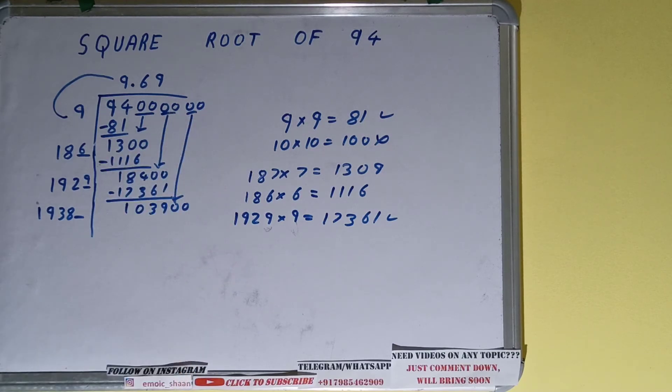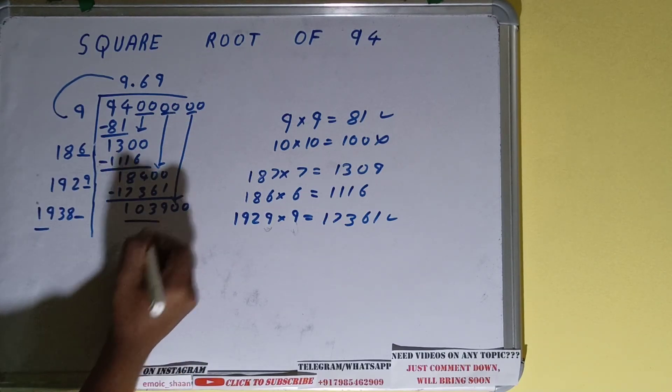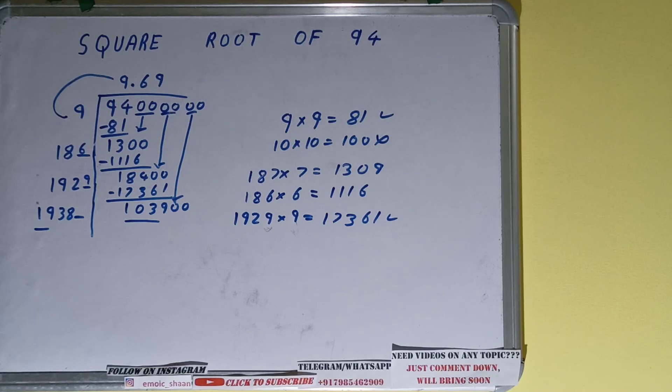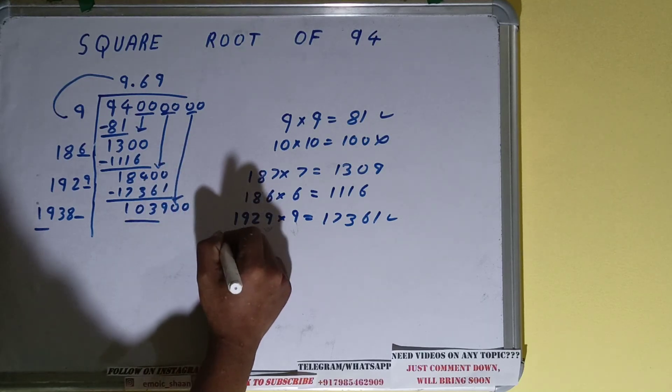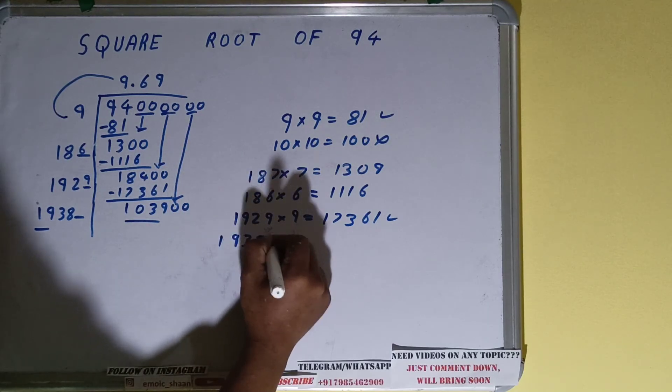Like this. Now compare this 1938 with this. So 19 six times is 114, and 19 five times is 95, so we can try five times. 19385 we can try.